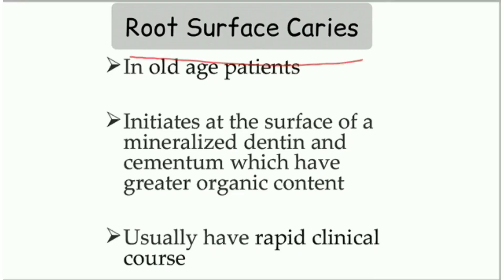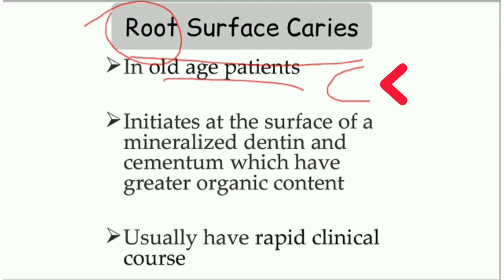Root surface caries, as the name suggests, occurs on the root surface. It is usually seen in old age patients. What happens is there is gingival recession in old age, so as the gingival recession occurs, there will be root exposure. As the root is exposed, there will be plaque accumulation. One important thing: the root is made up of cementum, which is less mineralized compared to enamel.